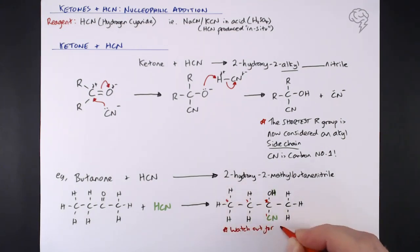Things to watch out for: it is possible you're going to get a new chain length depending on the ketone you start with. Draw your complete displayed product molecule and decide on a name from there. Carbon number one is always going to be that carbon in the nitrile group.